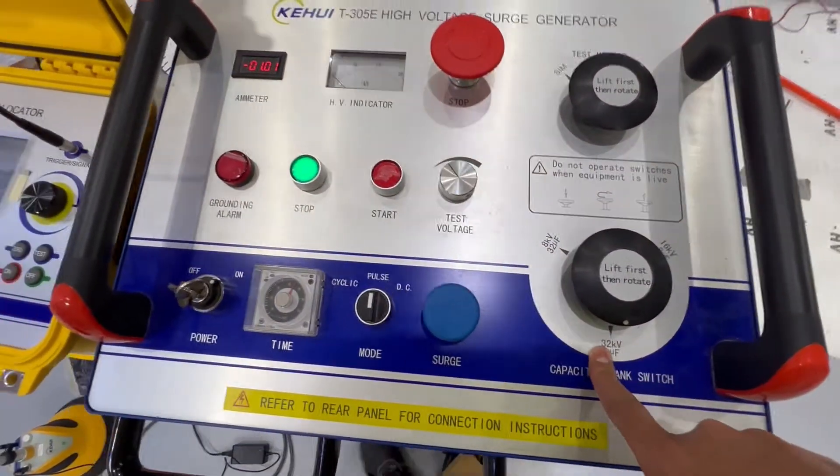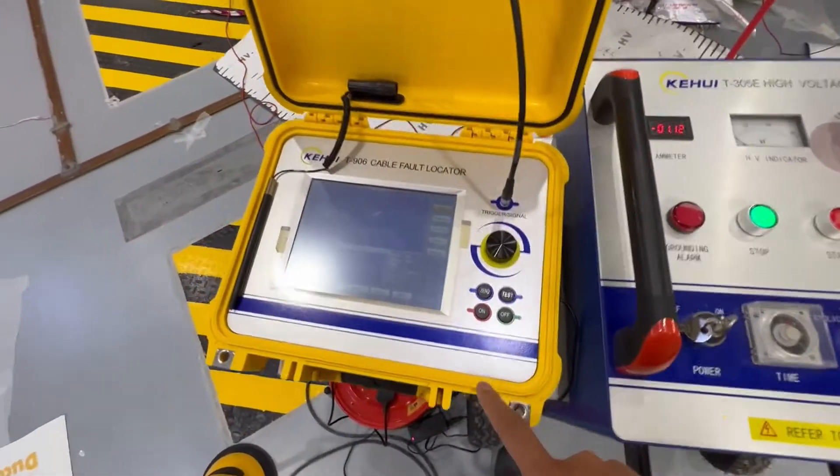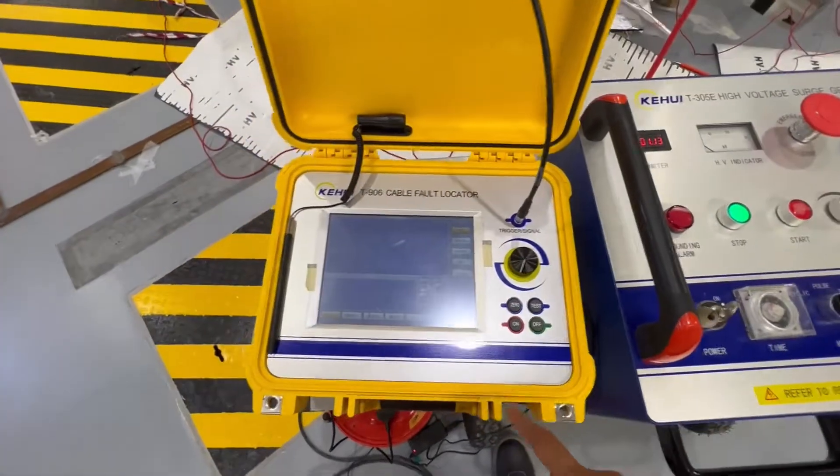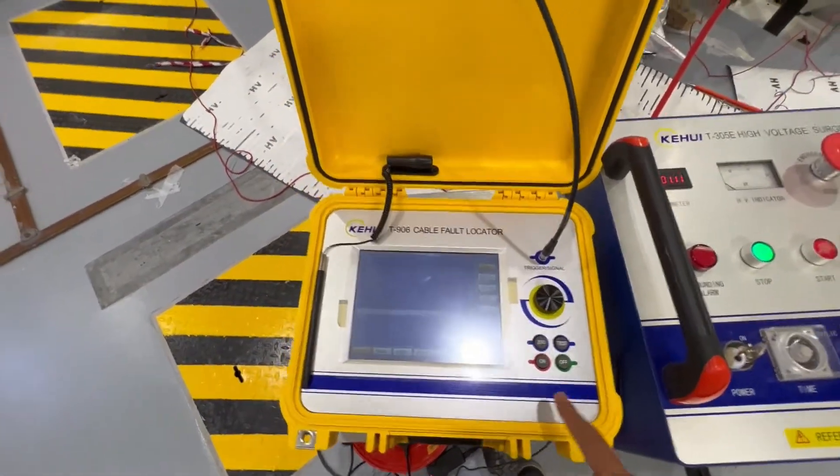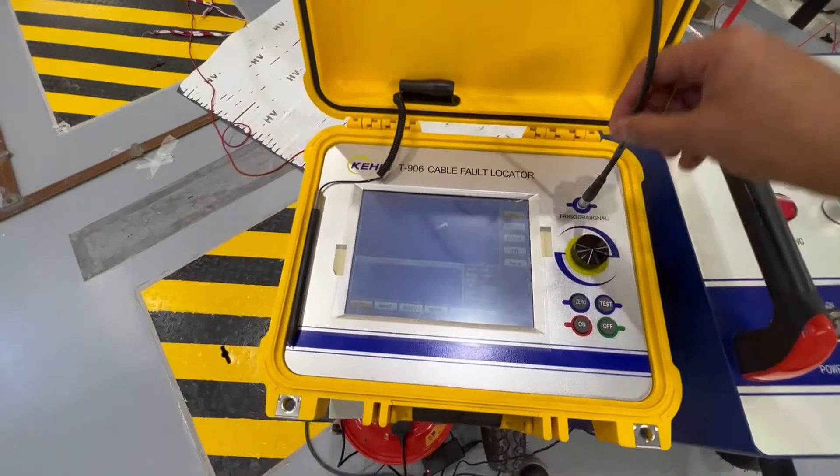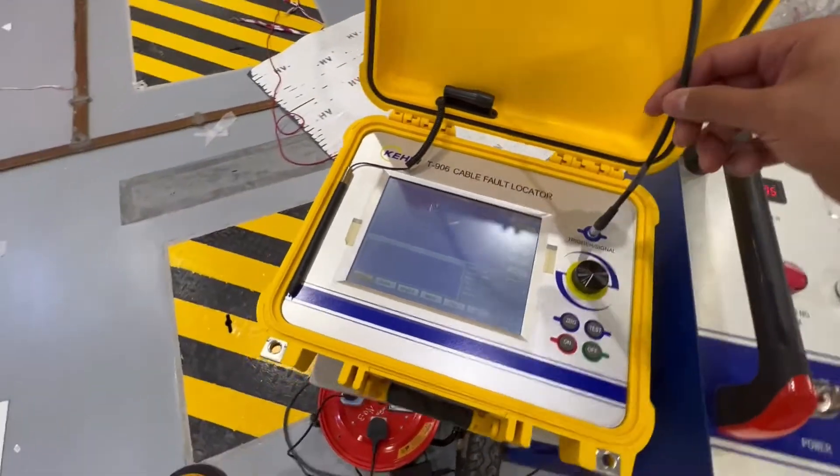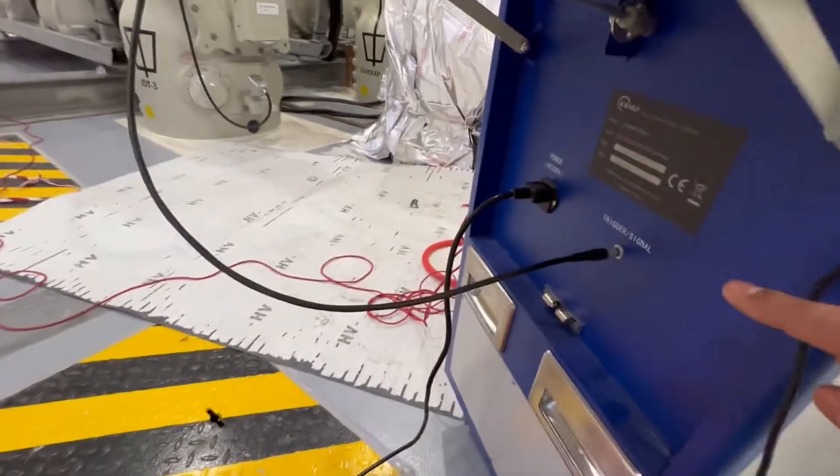This is a fault locator. The fault locator connects from LEMO to LEMO cable. This connection goes from the fault locator to the surge generator where we capture the reflections of the pulse.